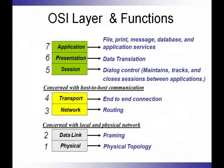The OSI layers and functions — taking a look here, there are seven layers. Starting from the bottom layer, we have the physical layer, the data link layer, the network layer, transport layer, session layer, presentation, and application layer.